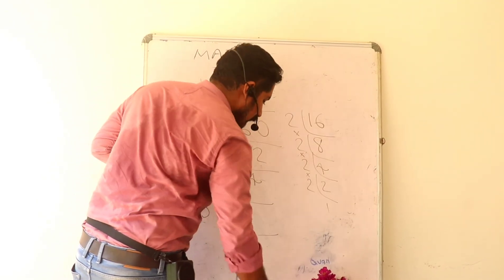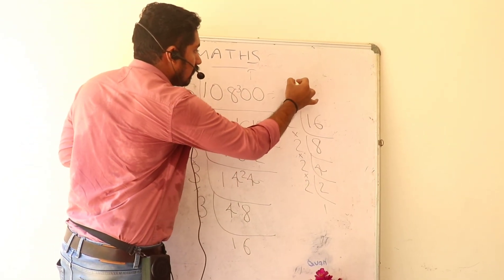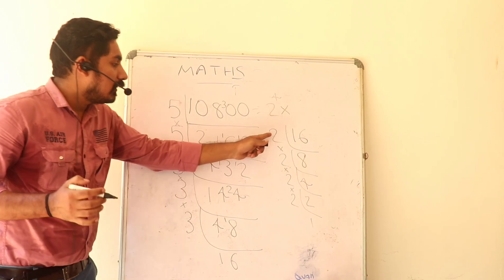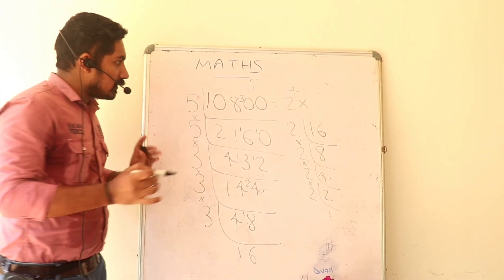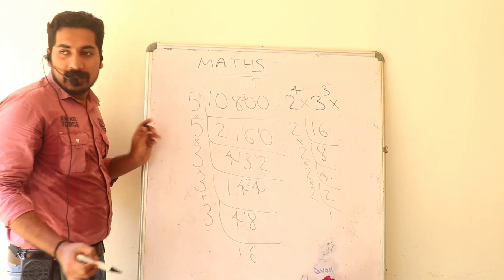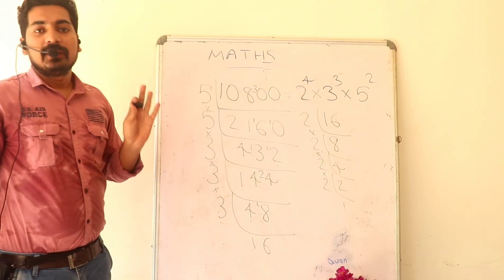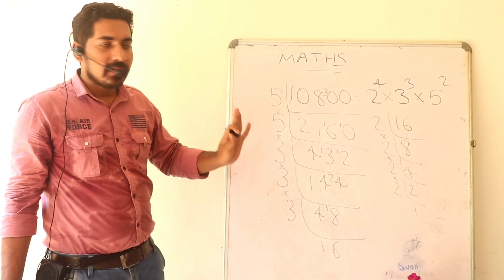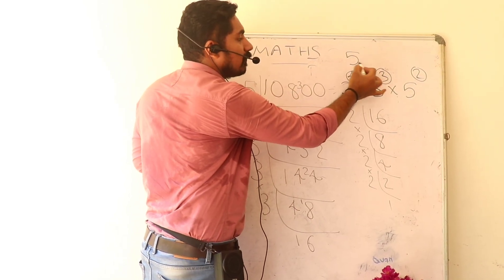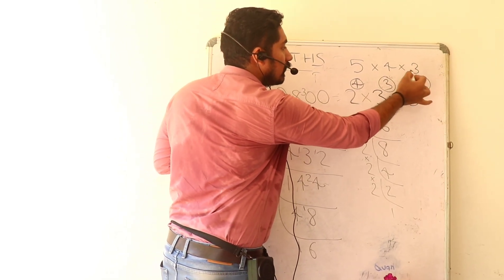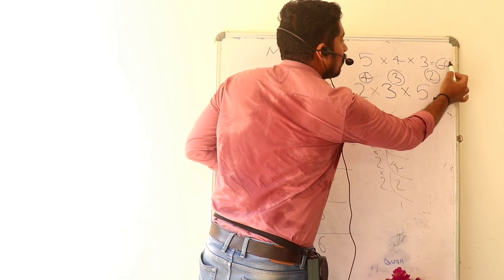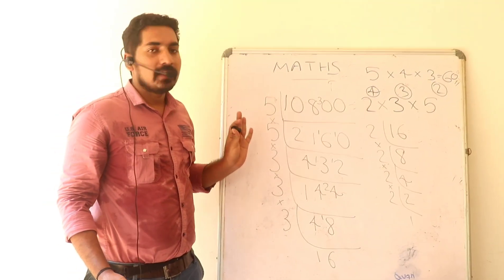We have 2 raised to 4, and 4 raised to 4, and 3 raised to 4, and 5 raised to 4. So the number of factors: using the powers, we get 1 raised to 4, 4 raised to 5, 3 raised to 4, 2 raised to 3. The number of divisors is 60.